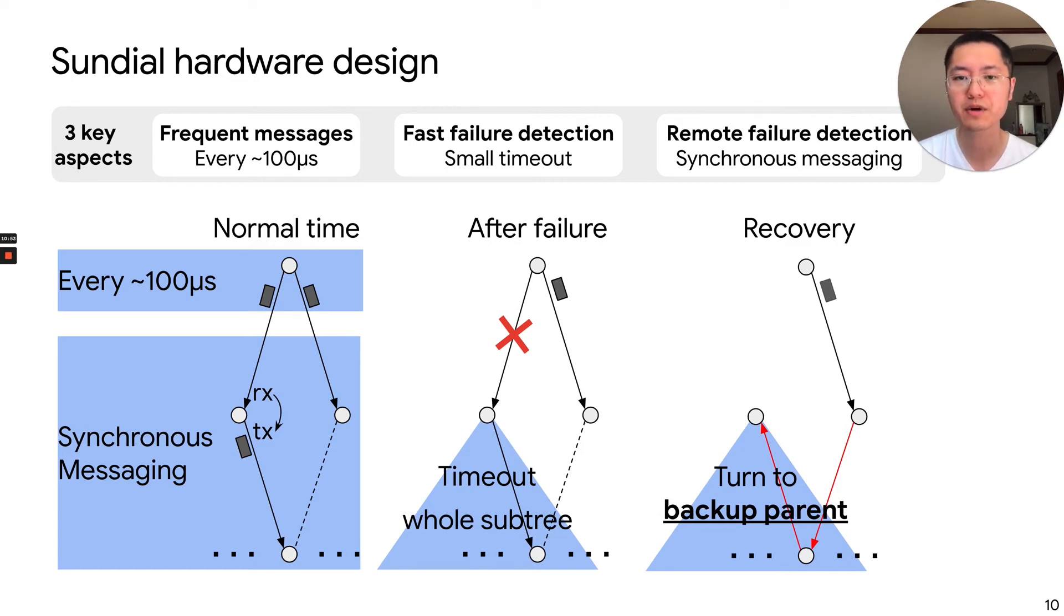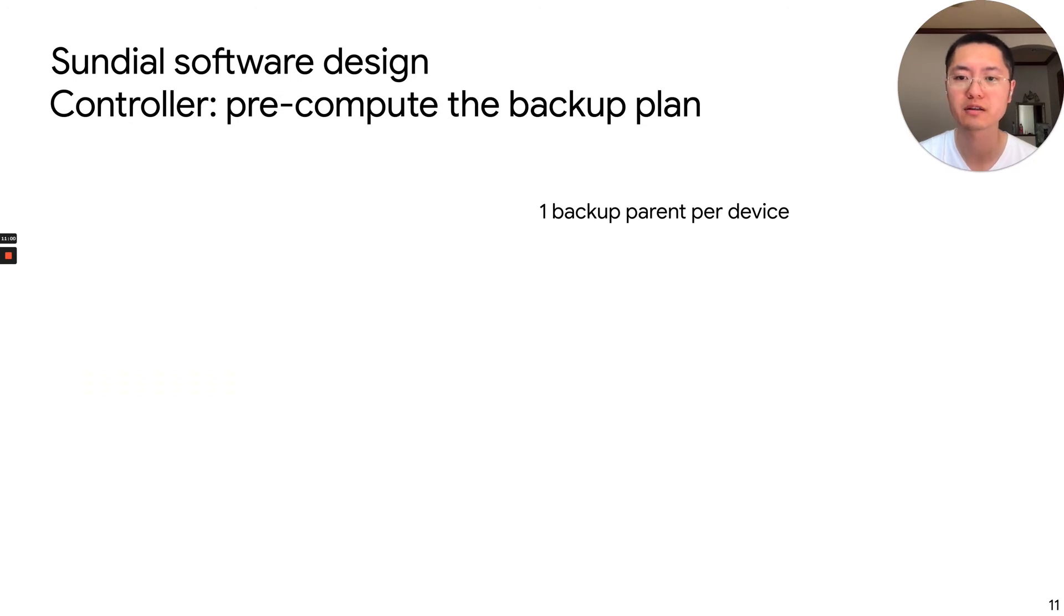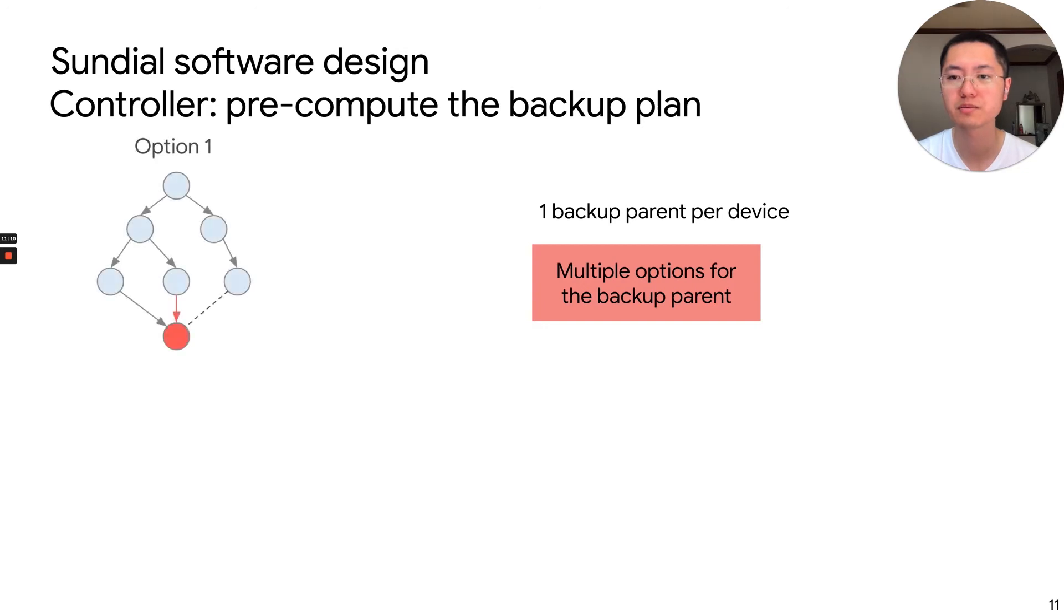The backup parent is pre-computed by the controller. So now let's look at how the controller pre-computes the backup plan. It consists of a backup parent per device. For each node, there are multiple options for the backup parent. For example, the red node has two options, denoted by the red arrows.